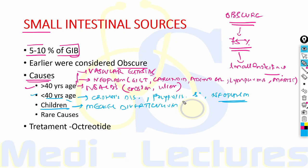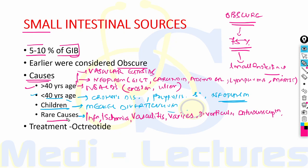Other rare causes of small intestinal bleed include infection, ischemia, vasculitis, intestinal varices, diverticula, and intussusception. Treatment includes octreotide, which is a vasoactive agent.